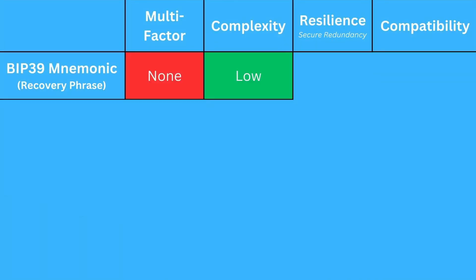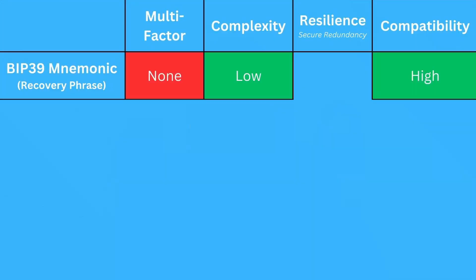If you are just using a standard BIP39 mnemonic, it is not a multi-factor backup. So that means you don't need anything else other than the seed words themselves to be able to regain access to your funds. Likewise, when running a BIP39 seed on a hardware or software wallet, you won't need anything else to sign and send transactions. The big advantage is simply its simplicity, along with near-universal compatibility — just about any wallet you find these days will support BIP39 seeds.